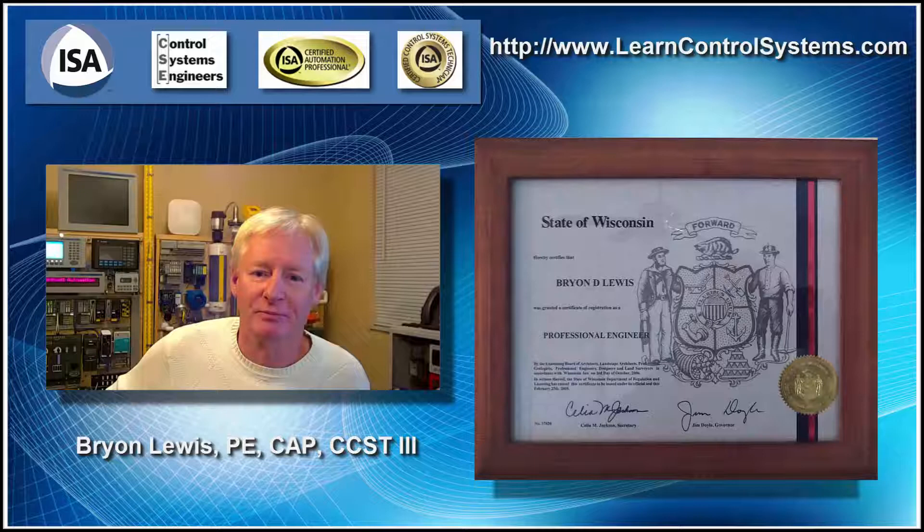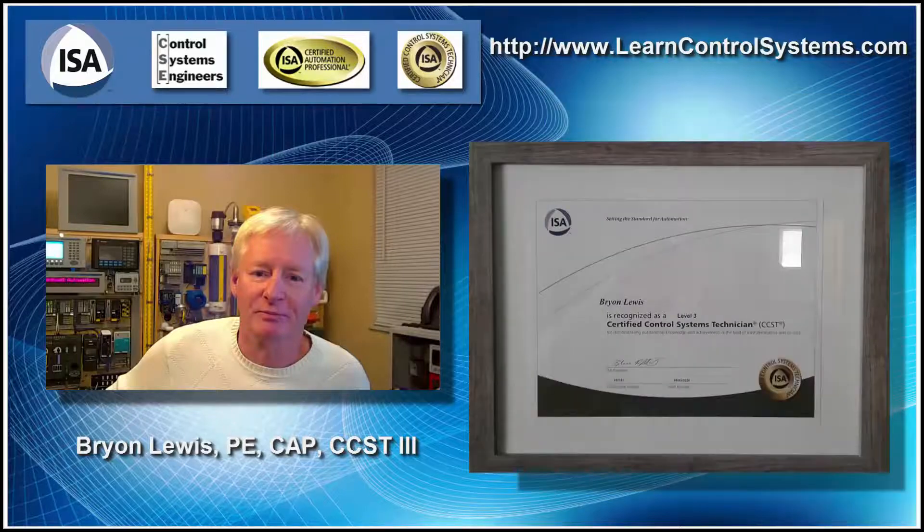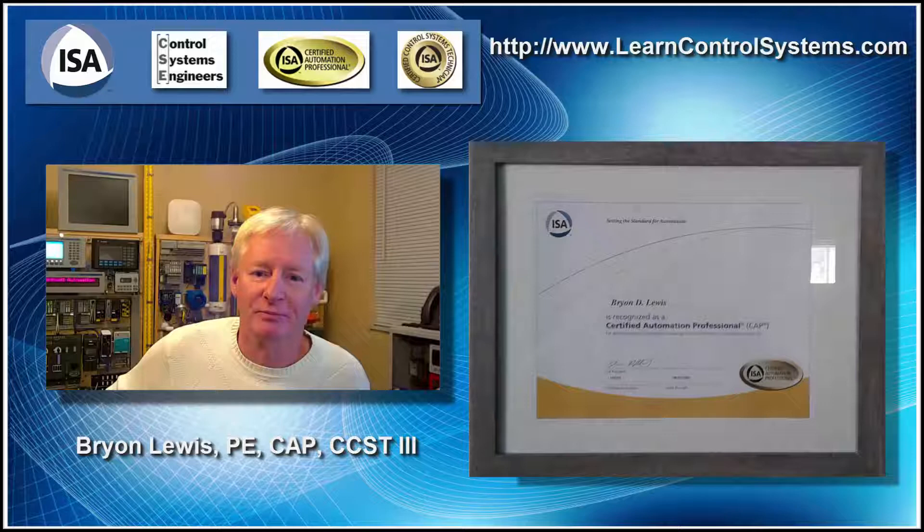Some of you may wonder: what are my qualifications to teach this course? I'm a professional engineer in control systems engineering — I passed my exam in 2004. I'm a certified manufacturing engineer in integration and control — I passed that in 2003. I'm a journeyman electronic technician in industrial electronics — I passed the CET in 1994. I'm a certified control systems technician level 3, which takes 13 years — I passed that in 2003. I'm also a certified automation professional — I passed that in 2017. And I'm also a state of Texas master electrician.